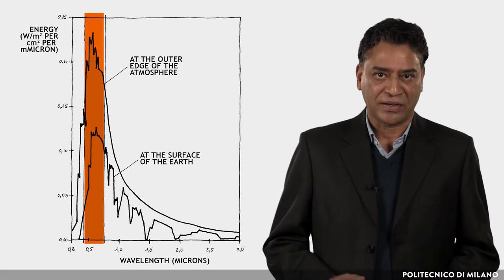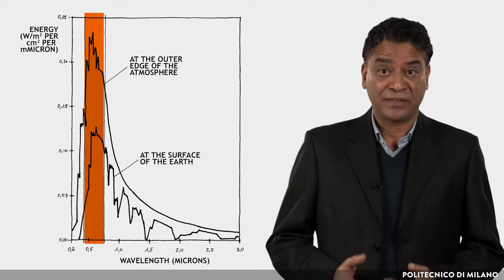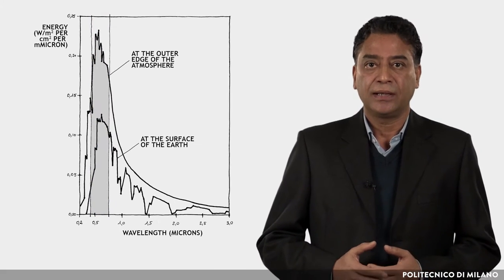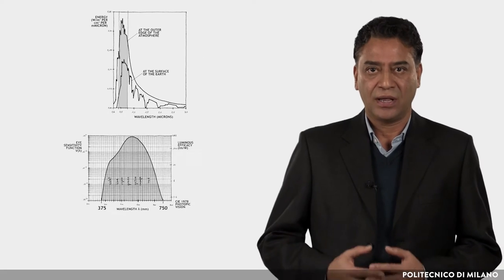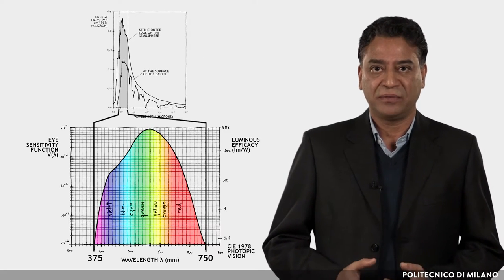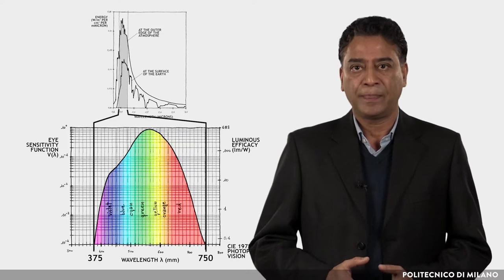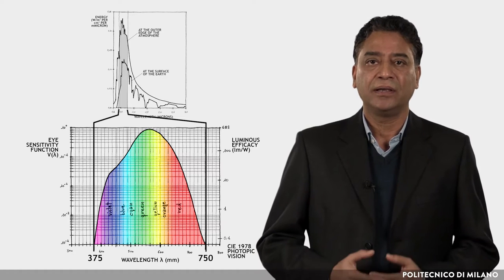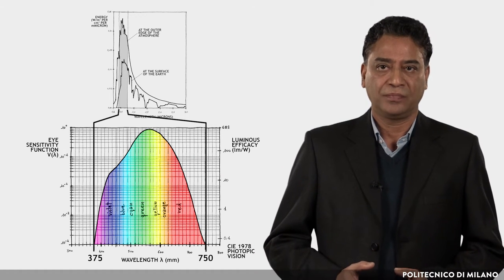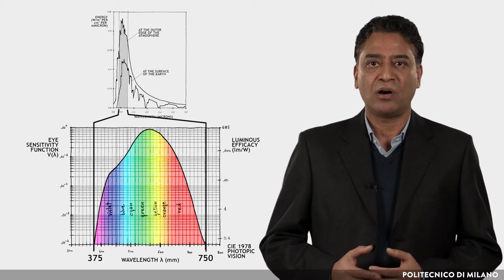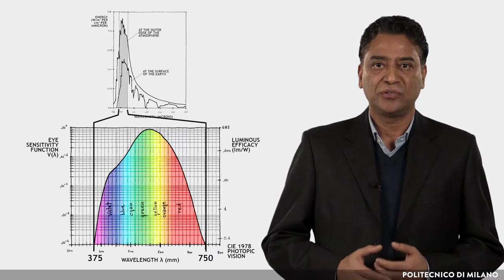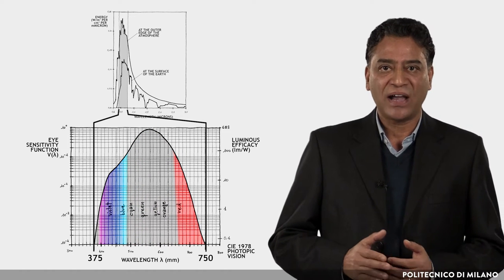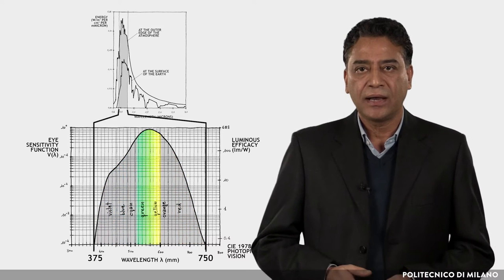What we call light is the part of the radiation that the sun sends to earth that our eye perceives and corresponds to about half of all the solar energy that reaches us. The range of wavelengths to which our retina is sensitive is between 380 and 780 nanometers. Within this interval, at each wavelength we attribute a color, but our eye is not equally sensitive to all colors. It is little sensitive to blue-violet and red, while highly sensitive to yellow-green.